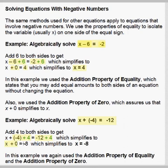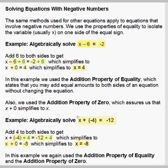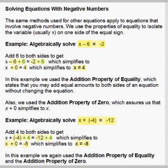Negative 12 plus 4 gives us negative 8 on the right, so we have x plus 0 equals negative 8. x plus 0 just becomes x, so our answer is x equals negative 8. We can plug this into the original equation and check: negative 8 plus negative 4 does indeed give us negative 12, so it is the answer. Again, we use the addition property of equality and the addition property of 0 here.